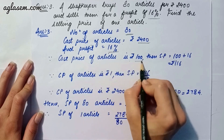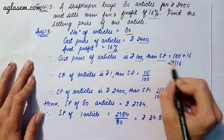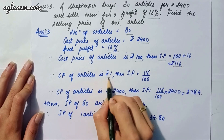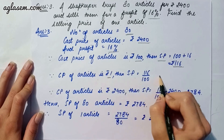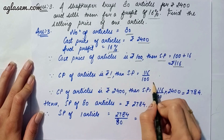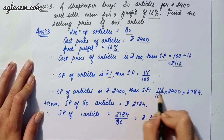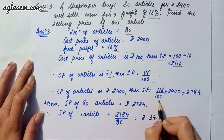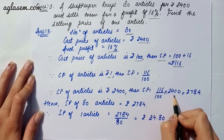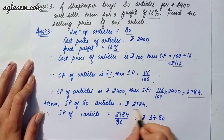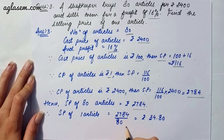If the cost price of an article is rupees 100, then selling price will be 100 plus 16, that is 116. If cost price is 2400, then the selling price will be 116 divided by 100 into 2400, giving rupees 2784. The selling price of 80 articles is 2784, so the selling price of one article is 2784 divided by 80, which gives 34.80.